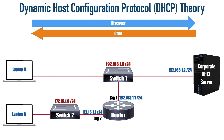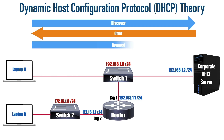Notice that when the discover broadcast went down to the router from switch one, it was dropped — a broadcast does not travel through a router. That's going to be an issue for laptop B in a moment. Also, this back-and-forth process is a four-step process. We've had the discover, which is a broadcast; the offer came back to the MAC address of laptop A; now we can direct the request using unicast directly to 192.168.1.2, saying 'yes, I would like to request IP address information'; then the DHCP server sends that information inside an acknowledgement message.